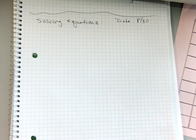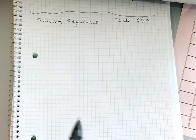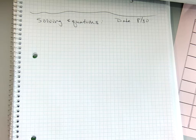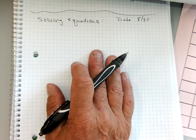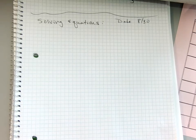Alright, so today it is August 30th, solving equations. When we solve an equation, we always want to do the following. We're going to undo it.